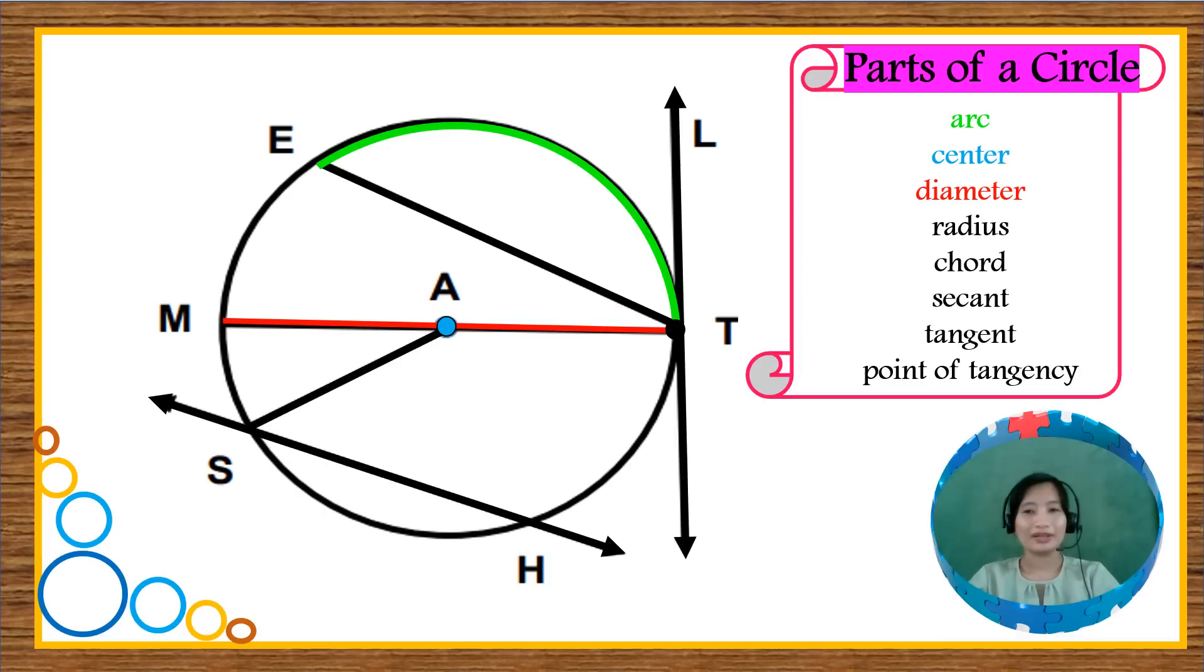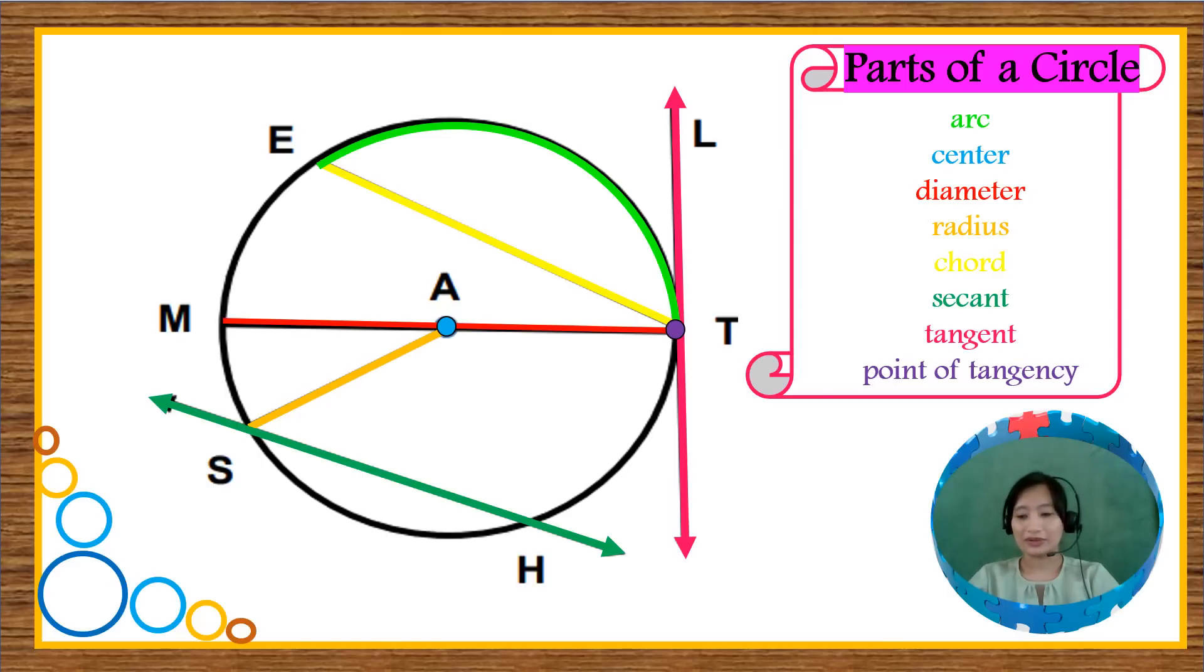We have center A. The diameter is marked with red. The radius is in orange. The chord is color yellow. The secant line is color green. The tangent line is color pink. And the point of tangency is purple or violet.